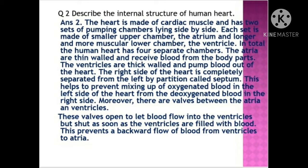Question 2: Describe the internal structure of the human heart. Answer: The heart is made of cardiac muscles and has two sets of pumping chambers lying side by side. Each set is made of a smaller upper chamber called the atrium, and a larger, more muscular lower chamber called the ventricle. In total, the human heart has four separate chambers.